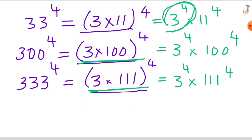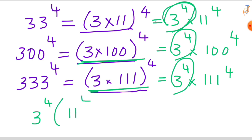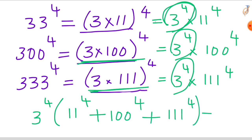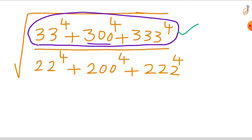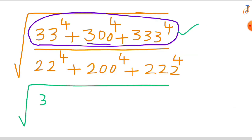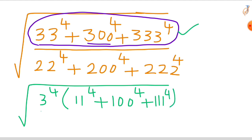Here we have 3 raised to the power of 4 as a common factor in all three terms. By factoring out the common factor, you get 3 raised to the power of 4, times the quantity 11^4 plus 100^4 plus 111^4. This is your numerator. So the numerator is 3^4 times (11^4 + 100^4 + 111^4).